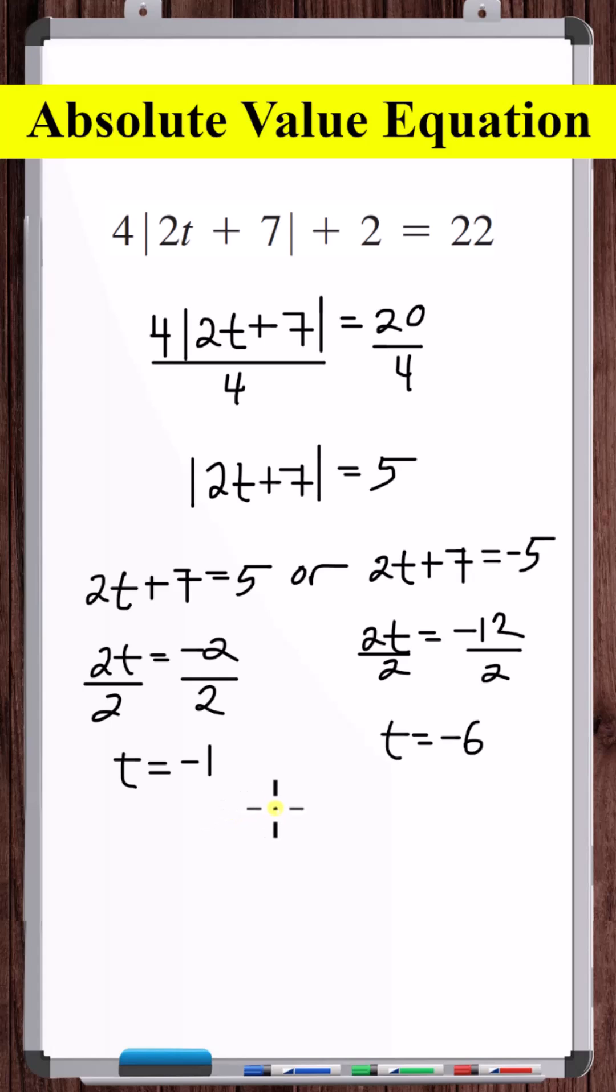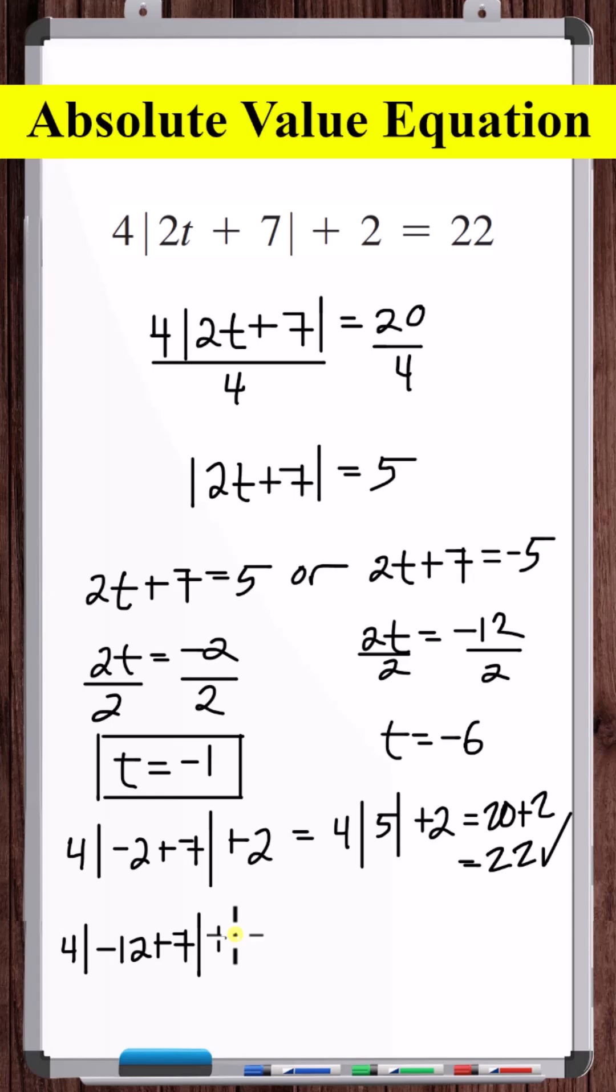Now absolute value equations are a type of equation that you have to check your final answers. So checking t equals minus 1, we see t equals minus 1 is the solution. Now checking minus 6, t equals minus 6 is also a solution.